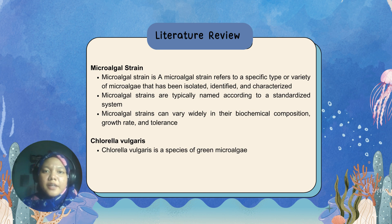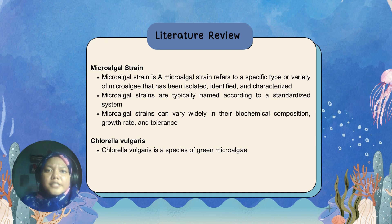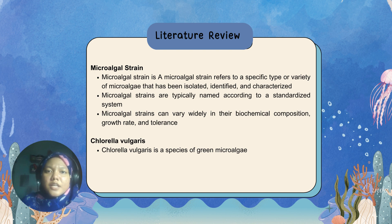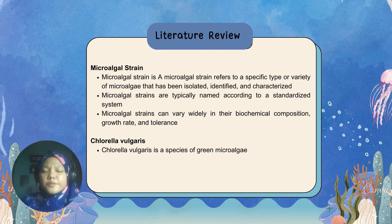Next is micro-algae strain. Micro-algae strain refers to a specific type or variety of micro-algae that have been isolated, identified, and categorized based on its genetic, morphological, and physiological properties. Micro-algae strains are typically named according to a standardized system consisting of genus, species, and often a strain identifier such as a number or a letter. Micro-algae strains can vary in their biochemical composition, growth rate, and tolerance to different environmental conditions, and are used in various applications such as biofuel, food and feed, cosmetics, and medicine.